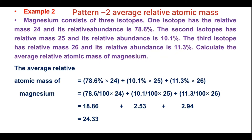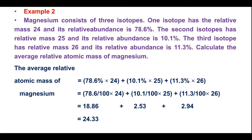The average related atomic mass is calculated using each isotope's mass number multiplied by its relative abundance. Mass number 24 with relative abundance 78.6%, plus mass number 25 with abundance 10.1%, plus mass number 26 with abundance 11.3%. This gives intermediate values of 18.86, 2.53, and 2.94.